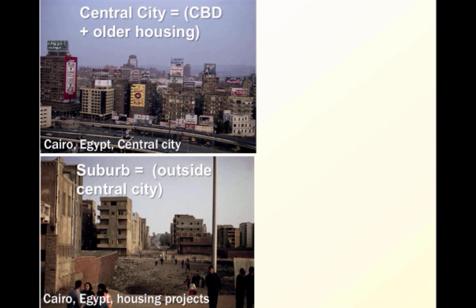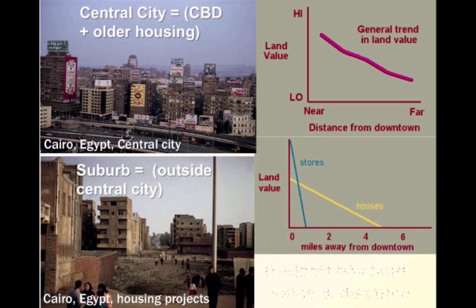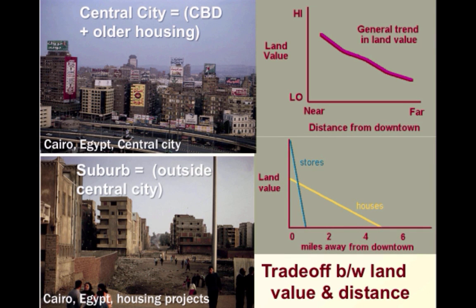One thing to consider when we see the different zones is the value of land as you move further away from the CBD. As you can see in this simple graphic, land value goes from high to low as you move further away from the central downtown region, because it's less desirable and there's also more land available. So as you increase your distance from the downtown area, there's a trade-off between land value and distance.